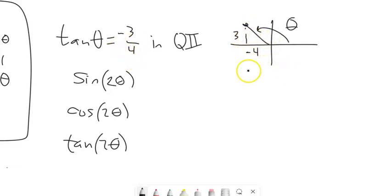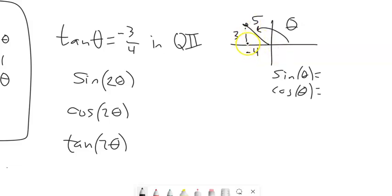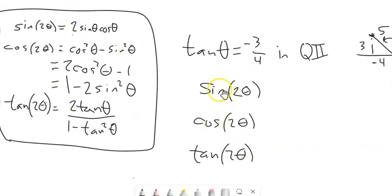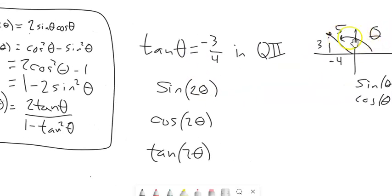Using the Pythagorean theorem, the hypotenuse is 5. So now I know sine and cosine of that angle. Sine is y over r, which is 3/5. Cosine is x over r, which is negative 4/5. Now that I know those values, I'll refer back to the double angle formulas. We're going to find the sine, cosine, and tangent values of double the angle without worrying about what the actual angle is.